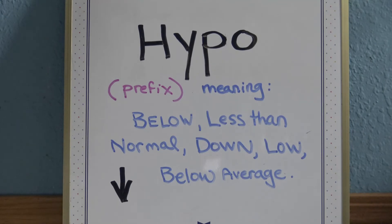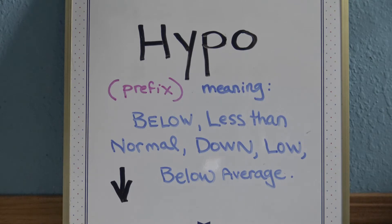HYPO — HYPO is also a prefix, so the beginning of a word. The meanings are lower, less than, below normal, below average. So low — HYPO is low.